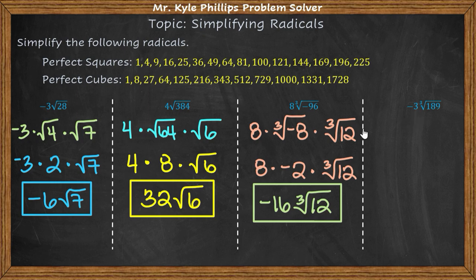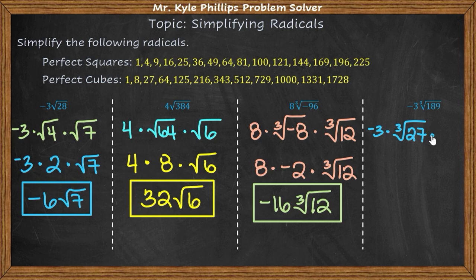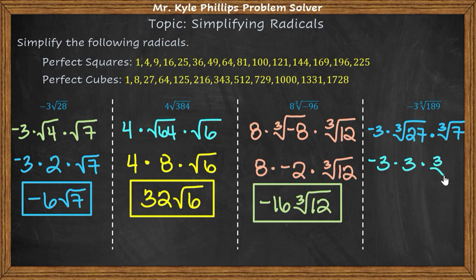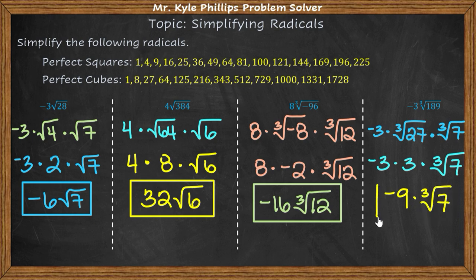Next we have negative 3 times the cube root of 189. The largest perfect cube that goes into 189 is 27, and 189 divided by 27 is 7. The cube root of 27 is 3, so we have negative 3 times 3 times the cube root of 7. Our solution is negative 9 times the cube root of 7, which is our simplified radical.